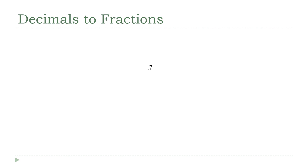So how about going from decimals to fractions? This really is as simple as reading the name of the decimal properly. Most people, when they see 0.7, will say 'zero point seven,' and that's fine. But to see how it converts to a fraction, it's helpful to read its proper name: 7 tenths. Because once you say it that way, that's the fraction version — 7 tenths.